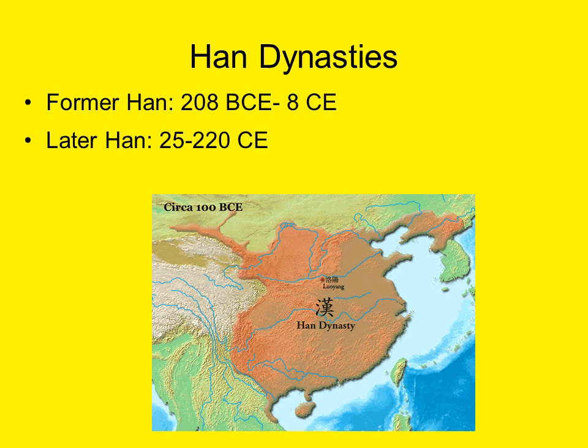In this lecture, we will be examining a group of Chinese royal dynasties known collectively as the Han Dynasties, H-A-N. Historians often break up the Han period into two components. The Former Han Dynasty, sometimes called the Western Han, reigned over China from approximately 208 BCE to 8 CE. The Later Han Dynasty, sometimes called the Eastern Han Dynasty, reigned over China from 25 CE to approximately 220 CE. The Eastern and Western names refer simply to the geographical regions that were the centers of power for each dynasty.